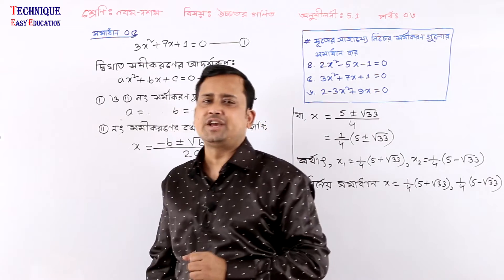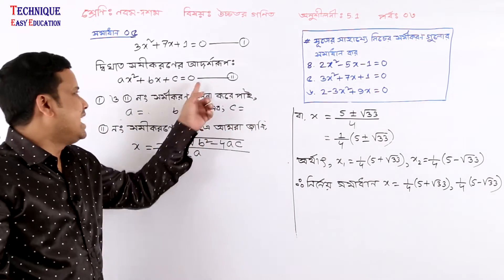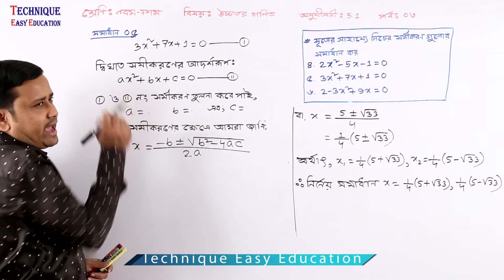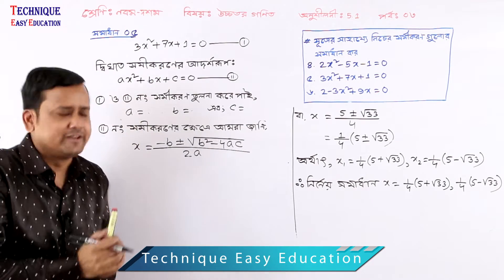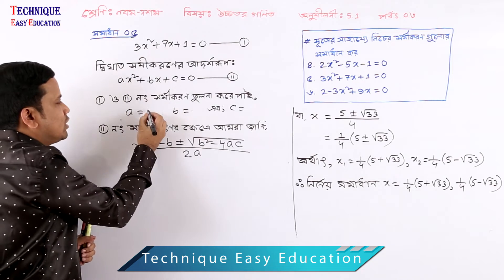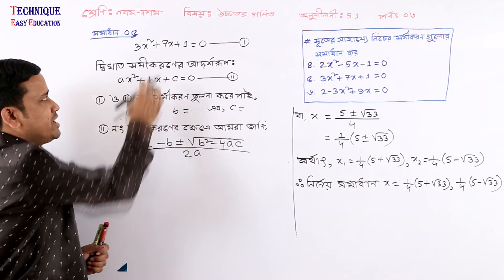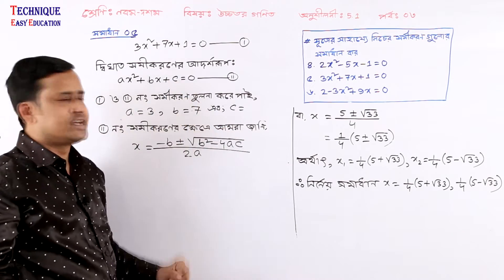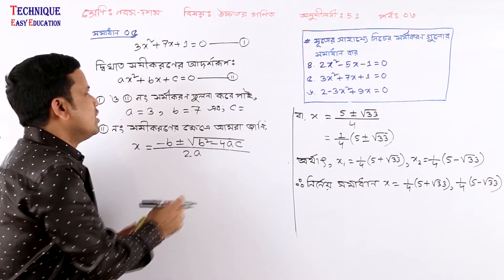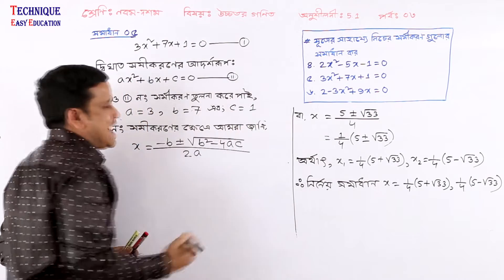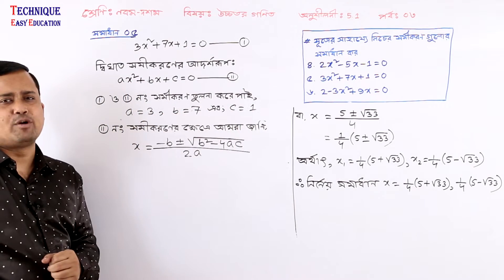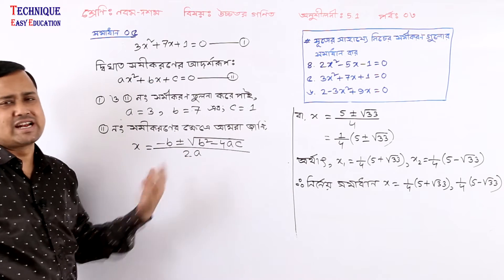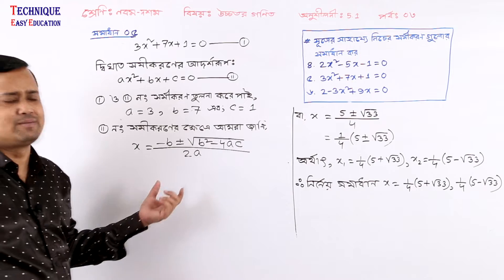The standard form is ax squared plus bx plus c equal to 0. Here a is 3, b is 7, and c is 1. The quadratic formula is x equals minus b plus minus root of b squared minus 4ac, all divided by 2a.